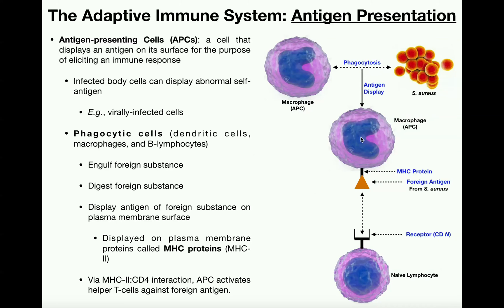So when this macrophage is floating around, if it comes in contact with a cell that can mount an immune response, this antigen on the surface will tell that cell that we need to mount an immune response specifically against this pathogen. This antigen didn't come from a virus, so it would not induce an immune response against a virus. It didn't come from your own cells, so it wouldn't mount a response against your own cells — it's specific to this pathogen.